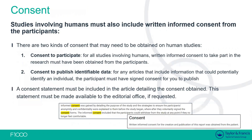Moving on to consent: involving humans, there are two kinds of consent that may need to be obtained. First, consent to participate — for all studies involving humans, written informed consent to take part in the research must have been obtained from the participants. The key wording we're looking for is 'written informed consent', so we need to know it was written and that participants knew what was involved in the study when they gave their consent.